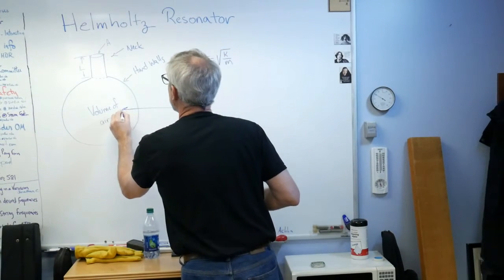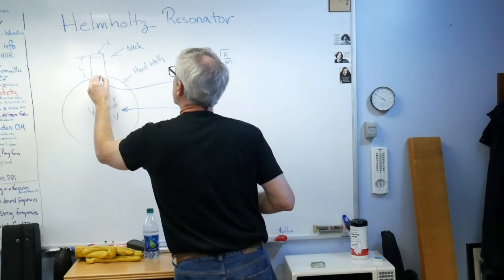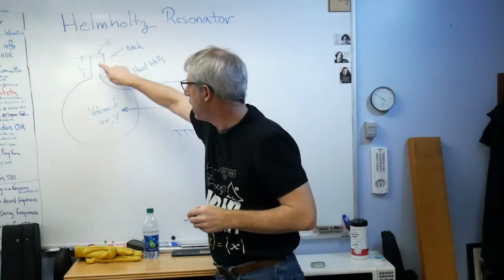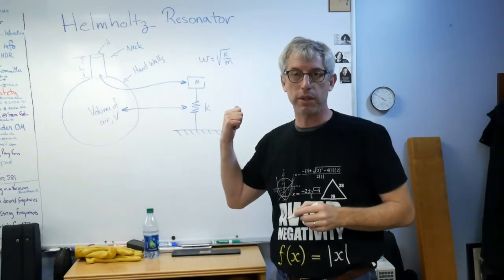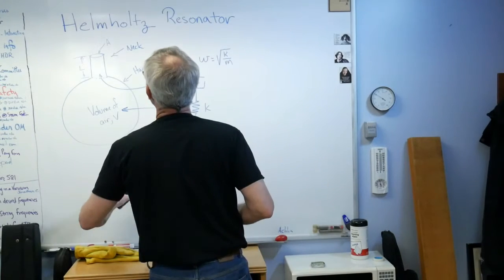So the volume of air in here is V and the volume of air in the neck is the mass. If I've got a mass and a spring, I have a resonator. Helmholtz had a resonator.